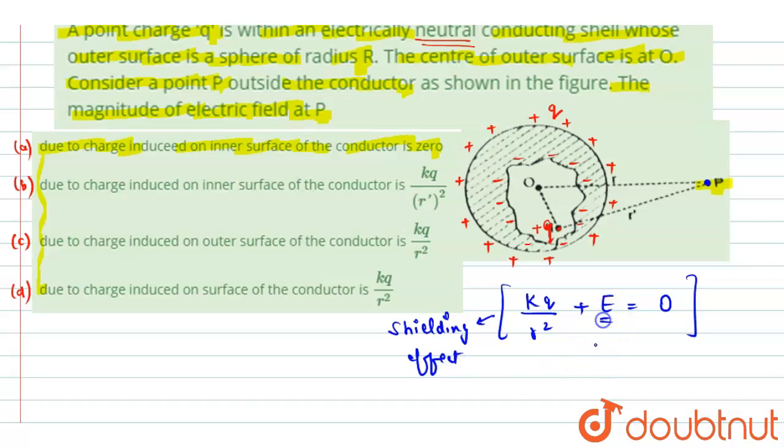So from here we can find that the electric field due to the induced charges on the inner surface will be equals to minus KQ divided by R square. So we have some finite value, but in option A it is given to be equal to 0. Hence option A is wrong.